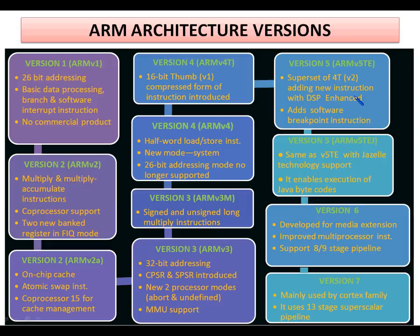ARM version 5TEJ added support for Jazelle technology, with the main function of executing Java byte codes. Version 6 was mainly developed for supporting multimedia extensions, and supports 8 or 9 stages of pipelining. Finally, ARM version 7 is mainly used by the Cortex family and may have the capability of a 10-stage superscalar pipeline.